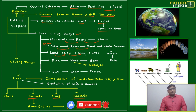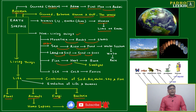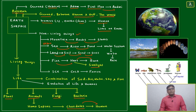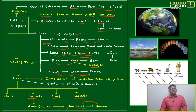Next will come land — landmass, island, continent, soil, sand, dust, and powder. After that will come fire, heat, and burn. The heat we feel is due to sunlight.